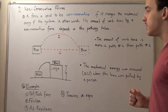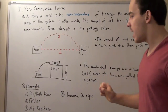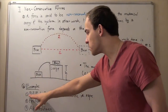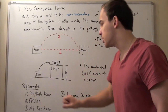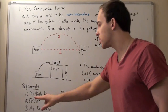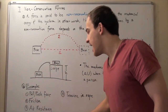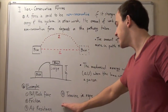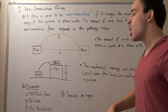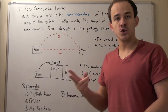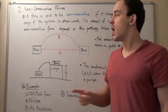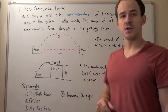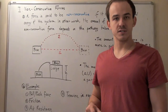Other examples of non-conservative forces include air resistance and tension in a rope, in addition to the push, pull, and friction forces we already discussed.